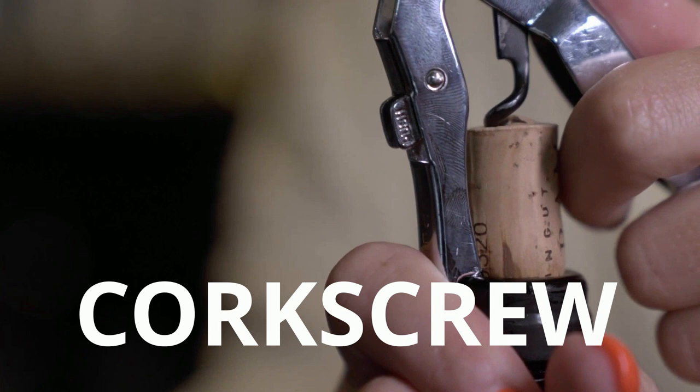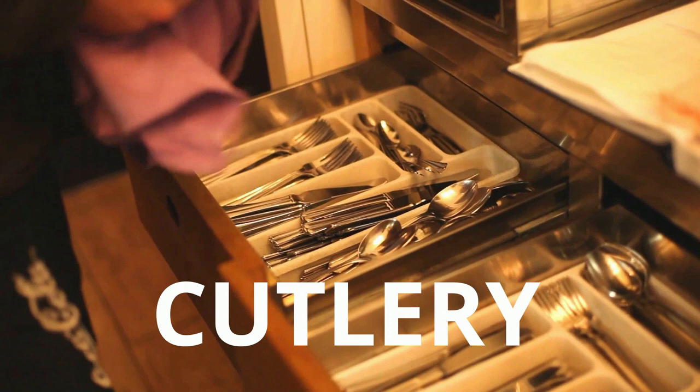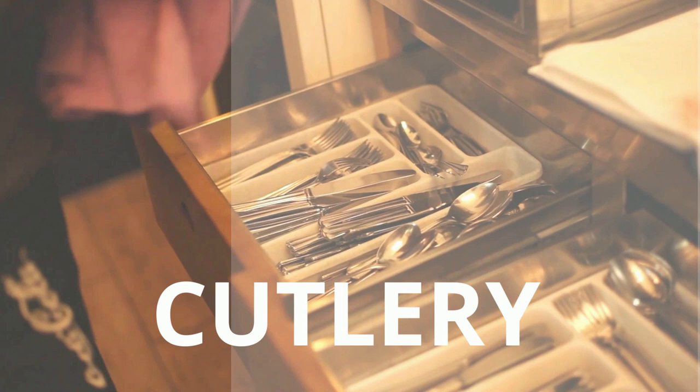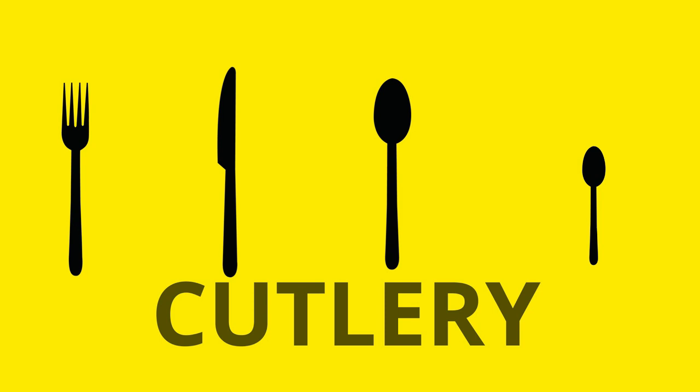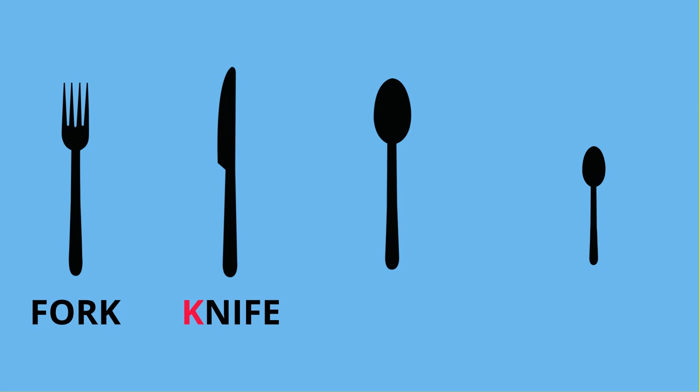The next word in our glossary is a general term for the utensils which we use to eat — cutlery. Repeat after me — cutlery. The utensils which fall under the umbrella term of cutlery include the fork. Let's try that one more time — fork. We have the knife, with our silent K. And next up, we have the spoon. Repeat after me — spoon.